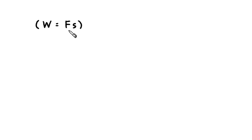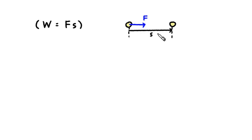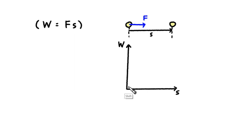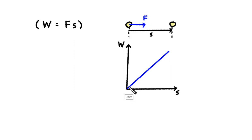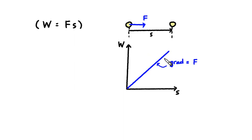It all starts from here. Work done is equal to F times S. So a force F applied through a distance S can do work on an object. If this is a constant force, then the work will be done at a constant rate. The stronger the force, the steeper the graph. So the gradient of this graph, or what we call the energy gradient, corresponds to the force F.